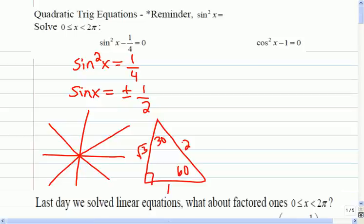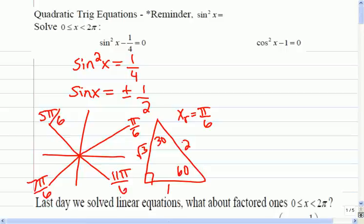So if I want the sine of a half, it's going to be 30 degrees, so I'll call this my reference angle. 30 degrees is pi over 6. So that means of the four angles, this one is pi over 6, this one is 5 pi over 6, 7 pi over 6, and 11 pi over 6. So those are the four possible answers for where sine squared x minus a quarter equals 0.